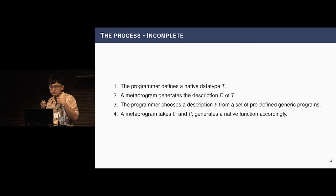So, what's the process here? Let me show you a process a programmer would do to ratify the generic programs we defined in our library. First of all, they define a native data type T, so they don't have to use the generic encoding. So they don't have to redefine their syntax in a generic universe. And then, they use a metaprogram which we provide to generate the data type description, D of T. Then, they can choose a description, a program description, from a set of predefined generic programs. Now, there's another metaprogram that takes D and P and generates the native function.